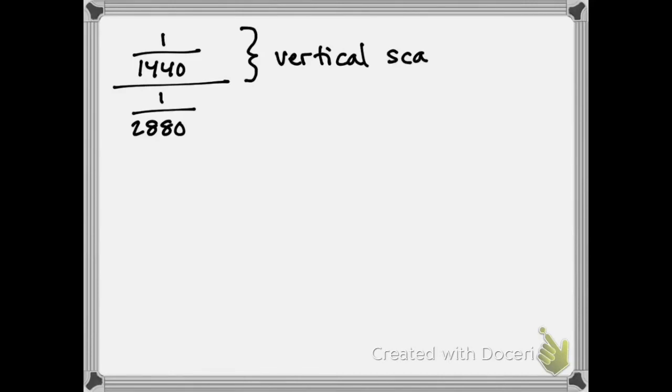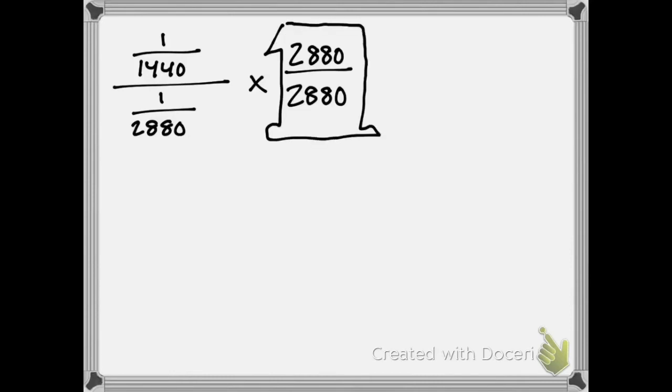The definition, remember, is the vertical scale divided by the horizontal scale. Again, we can simplify this by multiplying by the large number in the horizontal scale over itself, which is, again, the same thing as multiplying by 1.